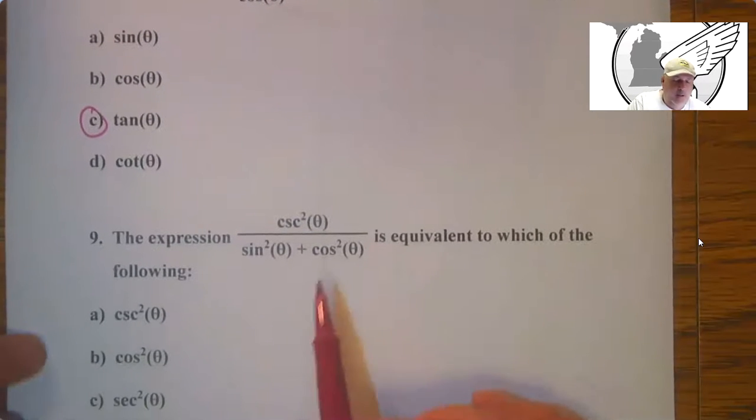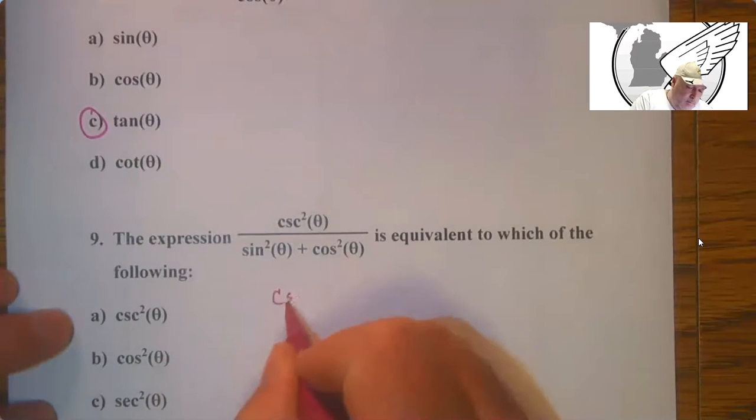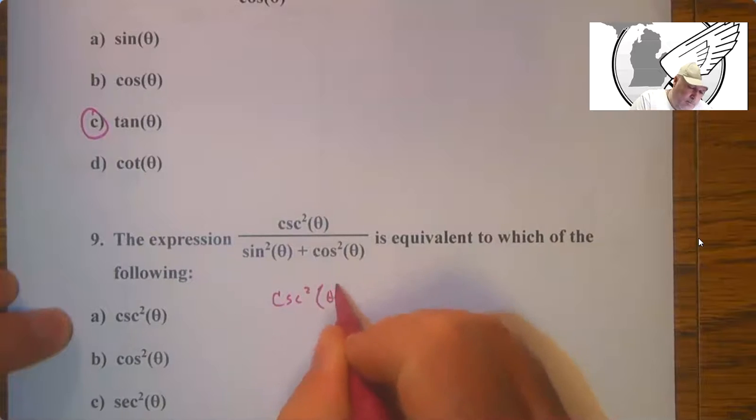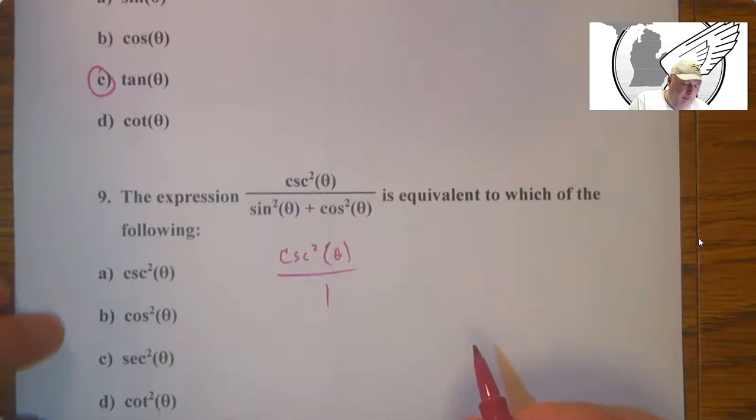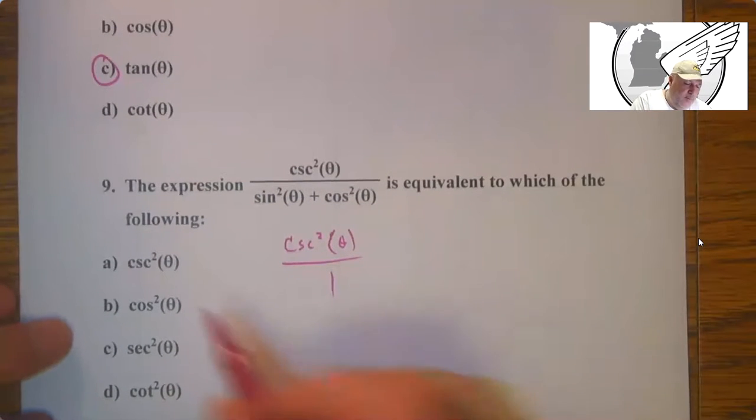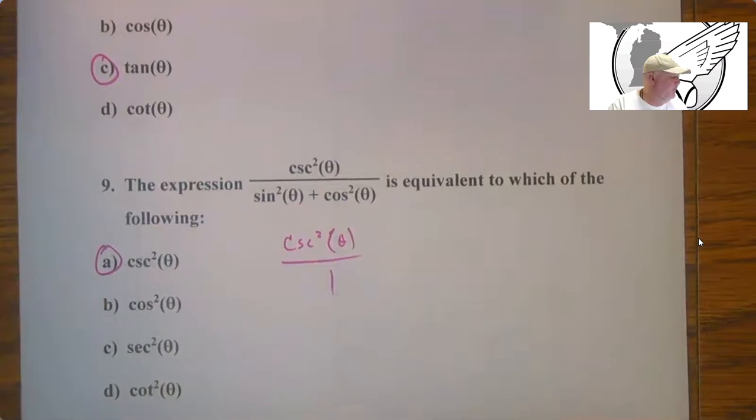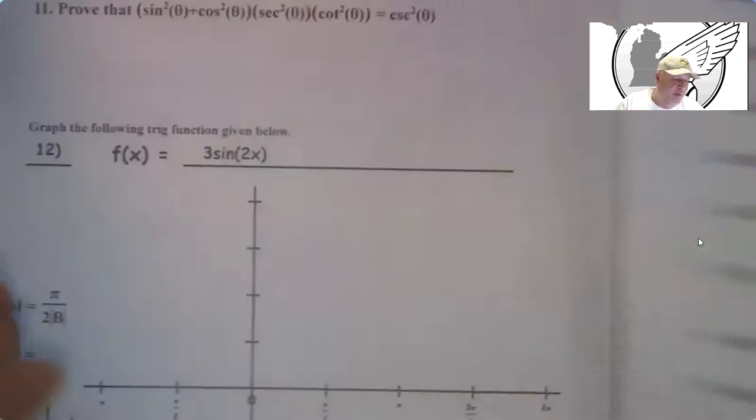Cosecant squared over 1. And so that is cosecant squared. Nothing too hard on that page.